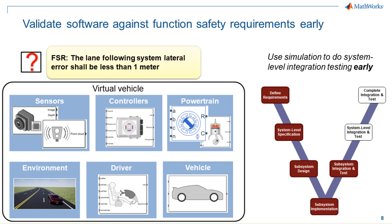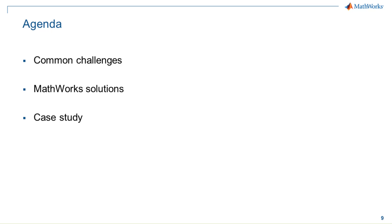Instead of waiting so late in the development process, virtual vehicle allows you to start testing sooner on the left-hand side of the V. In many cases, you can start testing in the requirements definition phase. The rest of the presentation will discuss some of the challenges with achieving the benefits of virtual vehicle and how MathWorks tools can help overcome them. We'll then come back to the lane-following case study to show how all these pieces come together.